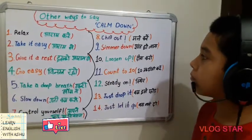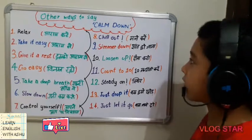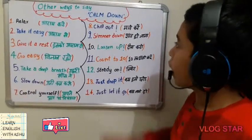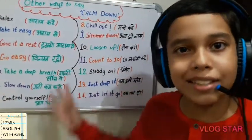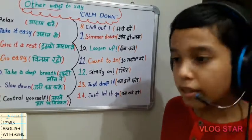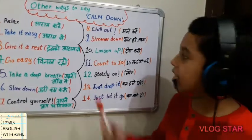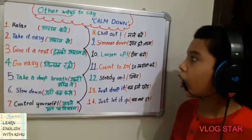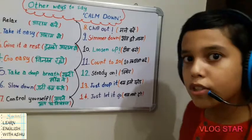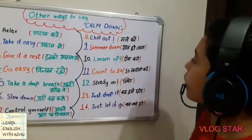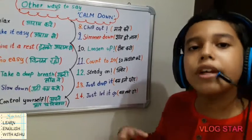The Hindi of 'simmer down' is 'shant ho jana' — meaning become calm, become quiet. In English we say 'simmer down.' Our next phrase is 'loosen up.' The Hindi is 'dheela karo' — it means be totally relaxed, be at ease.